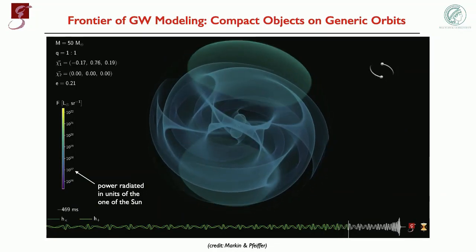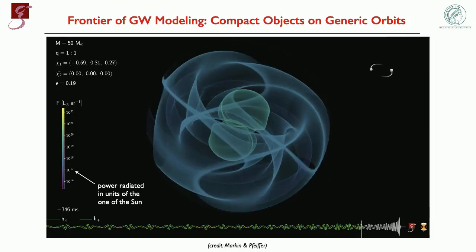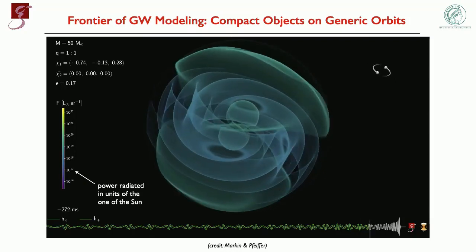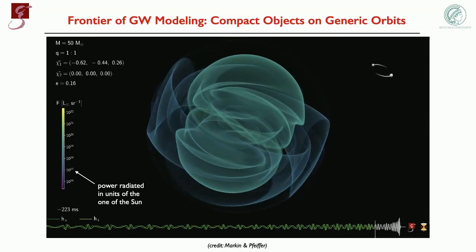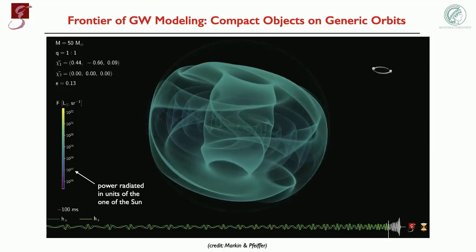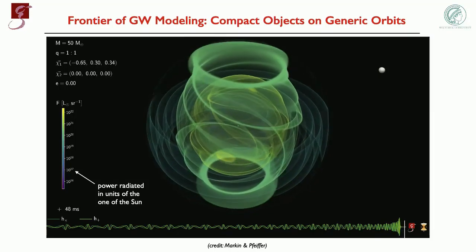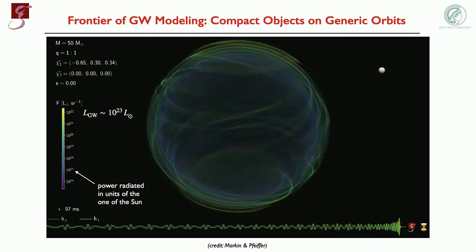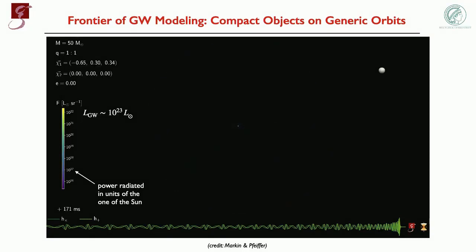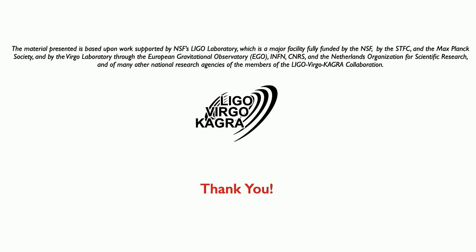I'll finish with this simulation of two black holes going around each other. What you see is the power radiated in units of the solar luminosity; the multiple here is 10^22. This is the radiation emitted in all directions, but in particular perpendicular to the orbital plane. Going toward yellow means the flux is increasing as the two bodies approach merger, where the luminosity reaches 10^23 times the luminosity of the Sun. I want to finish by thanking my group, whose work I've been describing, and also the funding agencies and the LIGO, Virgo, and KAGRA collaborations. Thank you very much for your attention.